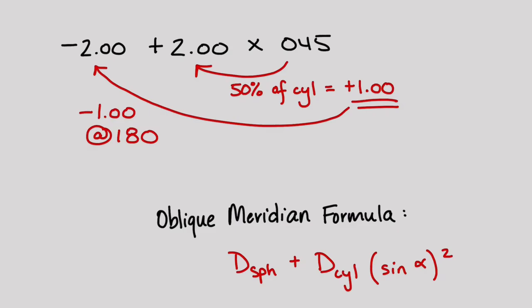But whichever method you use to find the power in the decentration meridian, just make sure it's the exact power. In the scope of what we're doing, we need to use the exact power of the lens in the decentration meridian.